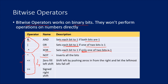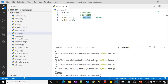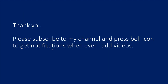There are three other bitwise operators — NOT, LEFT SHIFT, and RIGHT SHIFT — which we will discuss in our upcoming video. Hope this video was helpful for understanding the AND, OR, and XOR bitwise operators. Thank you for watching. Please subscribe to my channel and press the bell icon to get notifications whenever I add new videos. Thank you so much.